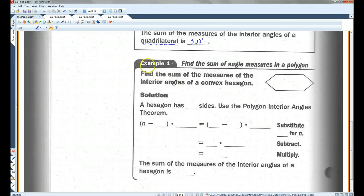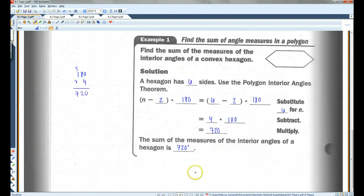All right, so for example, find the sum of the measures of the interior angles of a convex hexagon. Now remember, a hexagon has six sides, so we're going to use the polygon interior angles theorem, n minus 2 times 180. In this case, our n is 6, 6 minus 2 times 180. I plugged in 6 for n because it has six sides. 6 minus 2 is 4, 4 times 180, 720. So the sum of the measures of the interior angles of a hexagon is 720 degrees. All right, let's go on to page 2.